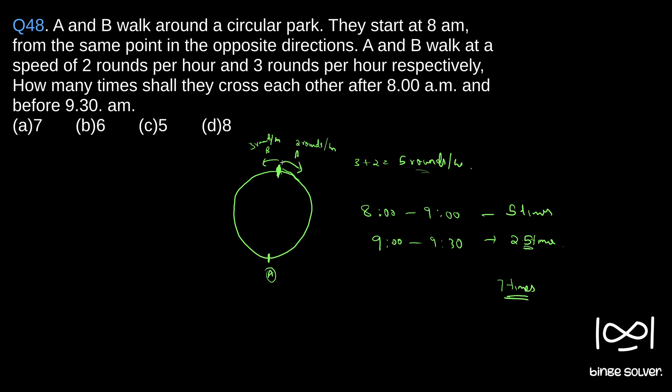0.5 can be ignored since A doesn't meet B. A will reach only at the end; at 9:30 A will reach here only. So if you see, 5 plus 2, 7 times is the answer. Solution to question 48 is A, 7.